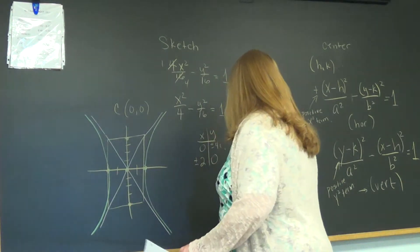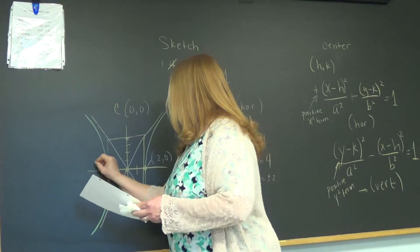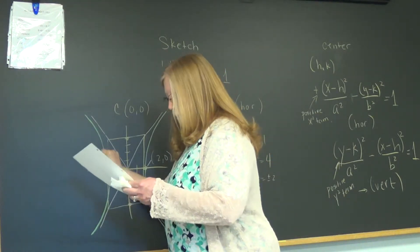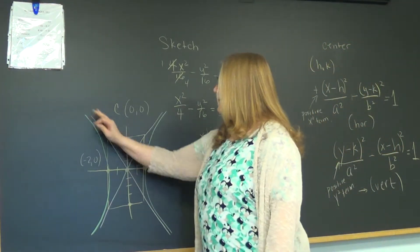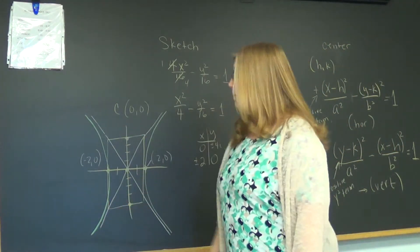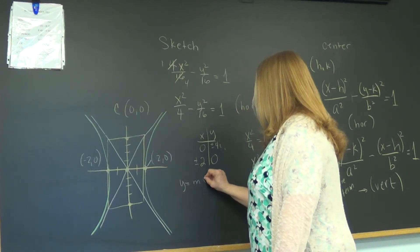So that is the most efficient way to graph the hyperbola. Now we know that the vertex on this side is (2, 0) and the vertex on this side is (-2, 0). The only other thing I would like to have is the name of these asymptotes, and that comes from y equals mx plus b.